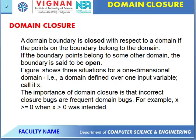Domain Closure: A domain boundary is closed with respect to a domain if the points on the boundary belong to that domain. If the boundary's points belong to some other domain, the boundary is said to be open. These are the two different categories of boundaries: open boundaries and closure boundaries.